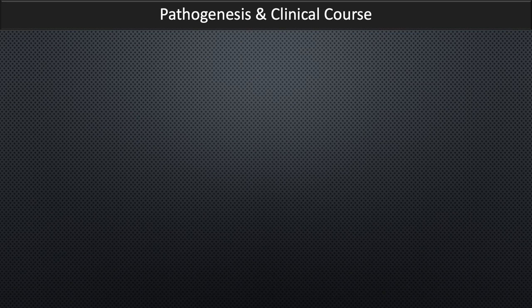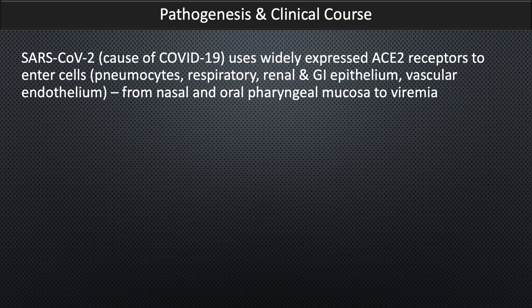Pathogenesis and clinical course. The novel coronavirus SARS-CoV-2, which is the cause of COVID-19, uses widely expressed angiotensin-converting enzyme type 2 receptors to enter human cells. These include pneumocytes, respiratory, renal, gastrointestinal epithelium, as well as vascular endothelium. The virus enters the nasal and oropharyngeal mucosa, causes a wide viremia that allows it to seed multiple tissues and organs in the body. That explains many of the imaging presentations.